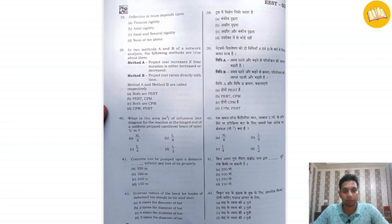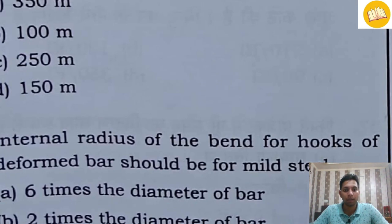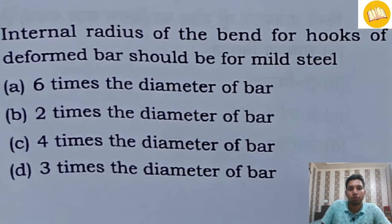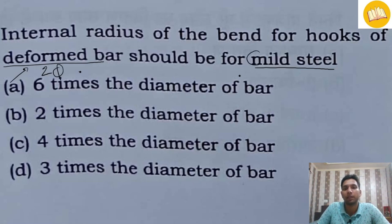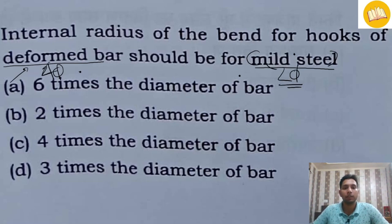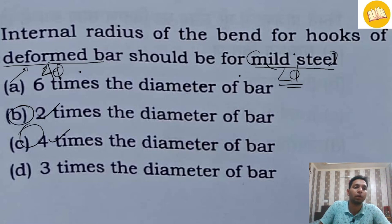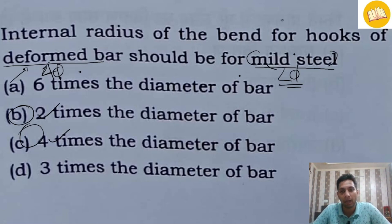In this phase we can see question 42. It is given that the internal radius of the band for hooks of a deformed bar should be — for mild steel. The question simultaneously mentions deformed bar and mild steel, but there are different provisions for both. For deformed bar, the internal radius is 4d, and for mild steel it is 2d. There is a dispute between options B and C, and we cannot ascertain which is correct. This question should be removed from the paper by the commission.